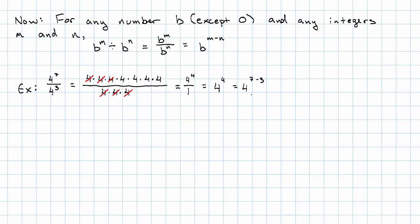Okay, let's see another example. Let's say we have 3 squared over 3 to the 7th. We'll have two copies of the number 3 in the numerator and seven copies of the number 3 in the denominator. Again, canceling common factors. What's left in the numerator is just 1, and what's left in the denominator is 1, 2, 3, 4, 5 copies of the number 3. So, 3 to the 5th.